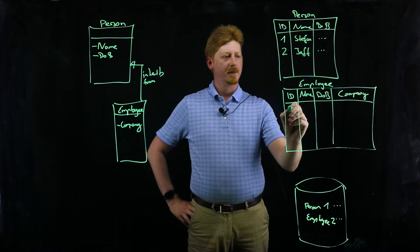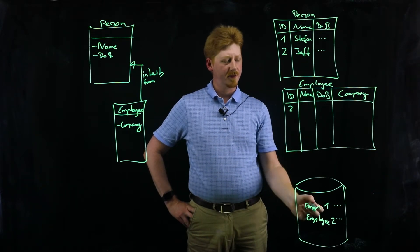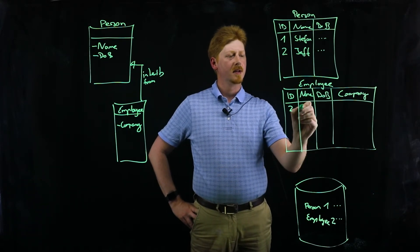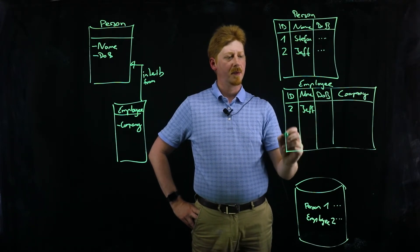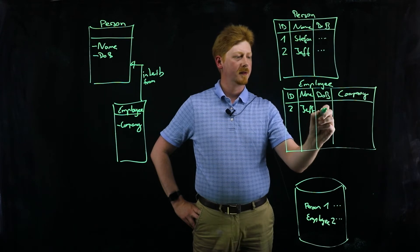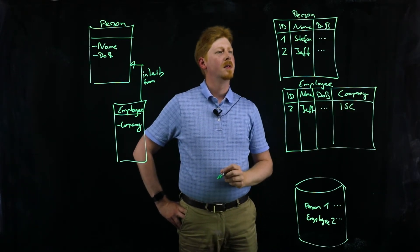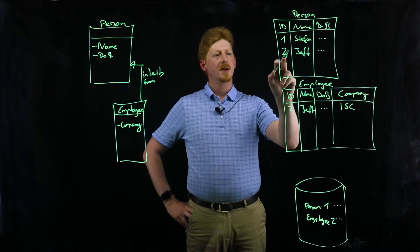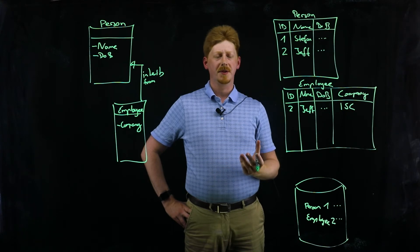Then Jeff will also show up in the employee table. Remember these are just views of the same data. So if I run a select star from employee, Jeff will show up because he's an employee and he works at InterSystems, but he also shows up as an entry in the person table because he's also a person.